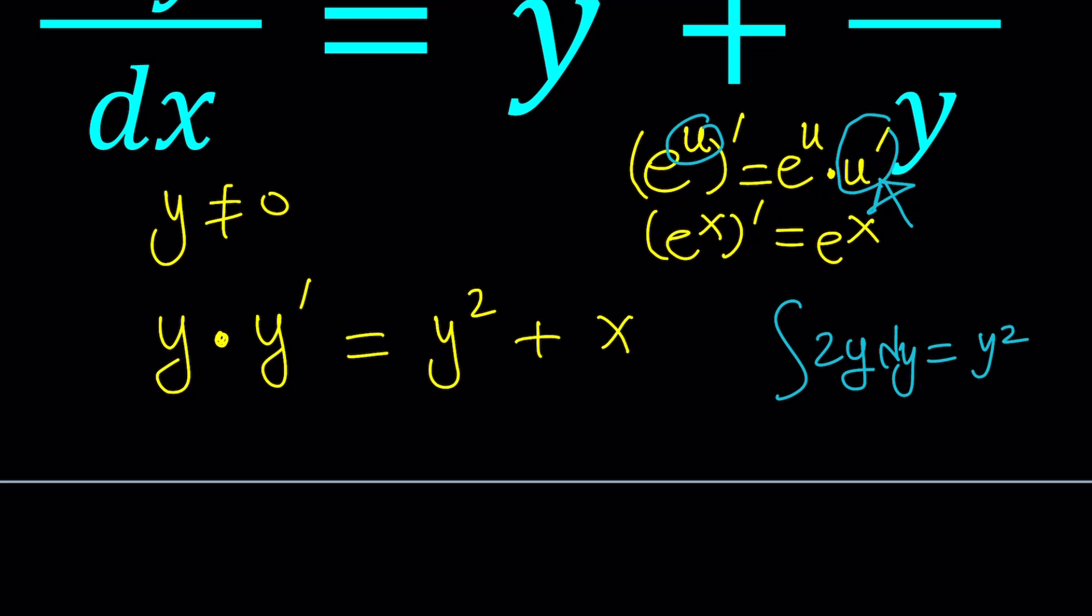So in other words, if you differentiate y squared, you get 2y. But not only 2y, you also get y prime. Why? Because of the chain rule. You have to multiply by the derivative of the inside function, which is y in this case. So, I'm so close. I just have to multiply everything by 2. Then I'll be good to go. Let's do it.